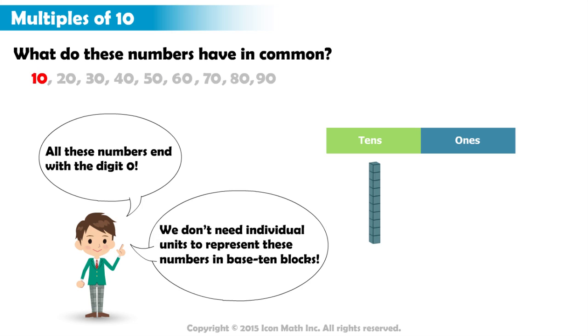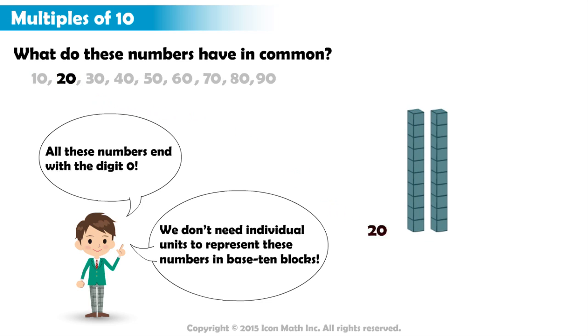For the number 10, we will need one rod. While for the number 20, we will need two rods. So we can think of 20 as two 10s or 2 multiplied by 10.